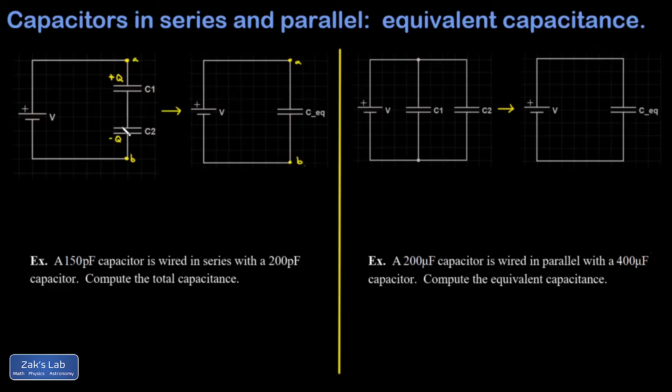What happens next is that I'm going to end up with a negative Q migrating from the top plate of C2 to the bottom plate of C1, and that leaves behind a positive charge on the top plate of C2. So each of these capacitors ends up with the same charge magnitude.